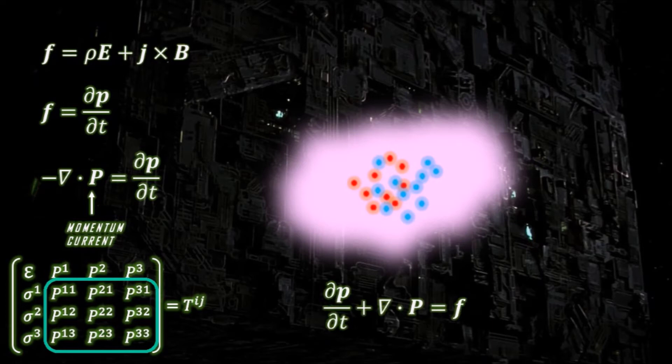The right-hand side is a source of momentum. If f is zero, we just get the good old conservation equation. Okay, going back to this equation.